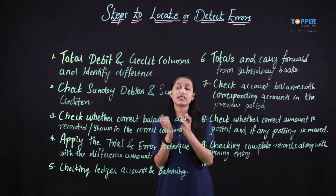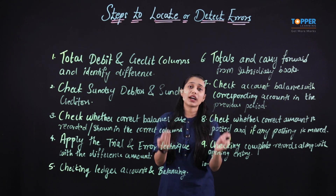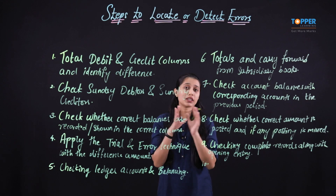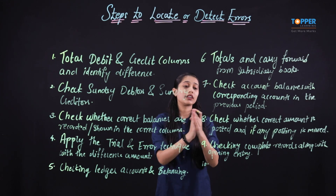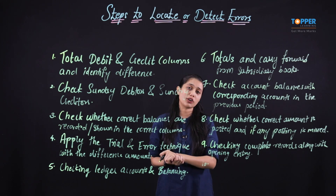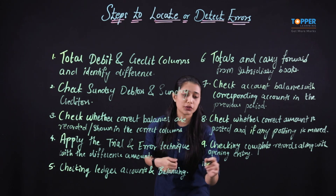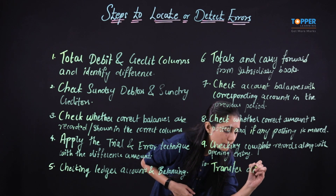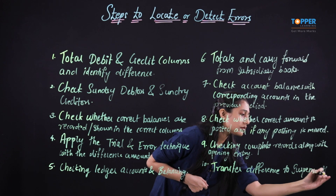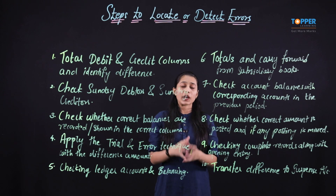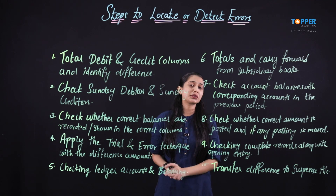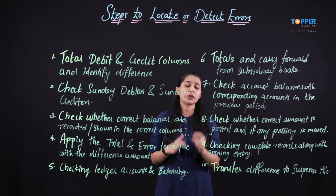Keep in mind that whenever there is a difference in the trial balance, we can follow these particular steps and try to identify the exact error. Once the error is identified, we can rectify the same and then the trial balance will tally. However, if we are not able to identify the difference, then first check the complete record from the original books of accounts to the last posting, and lastly, if still the error is not traceable, we will have to transfer the difference to the suspense account. With this, we now very well know what are the important steps to take if the trial balance is not agreeing. I hope that each of these steps is now very clear to you and you will be able to identify the error very correctly with the help of these steps. Thank you.